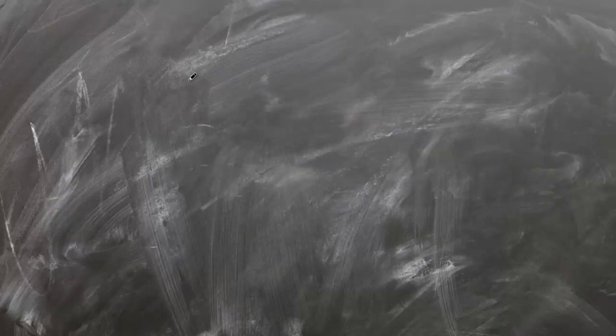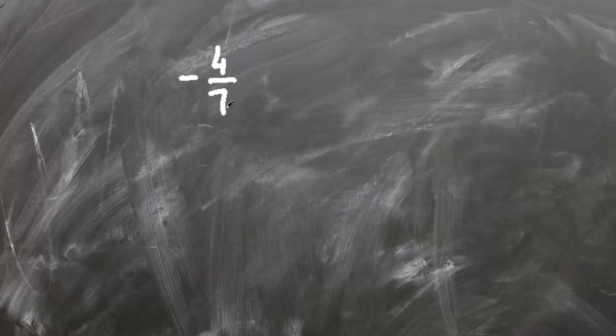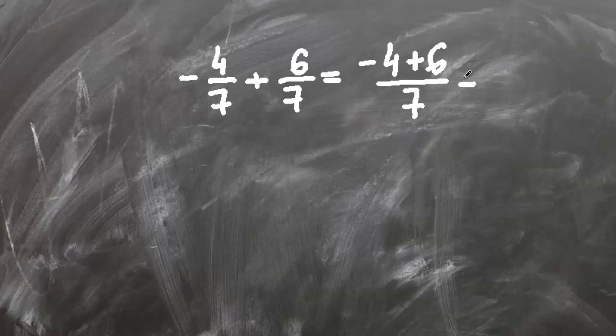Now let's solve minus four sevenths plus six sevenths. Now this is minus four plus six over seven and this equals to two sevenths.